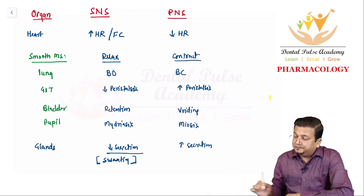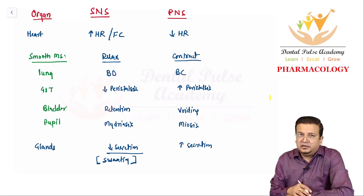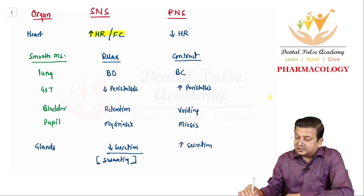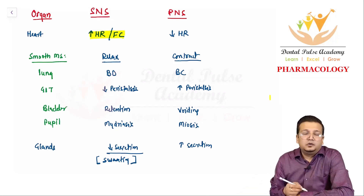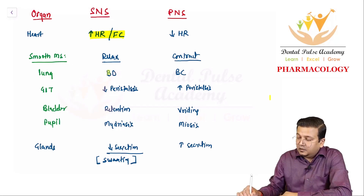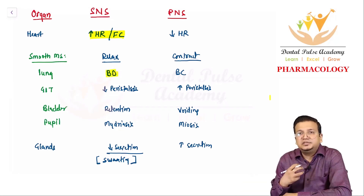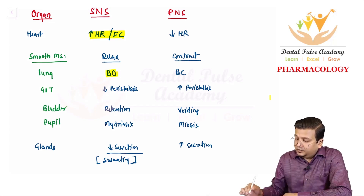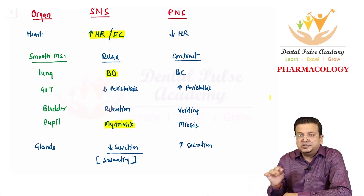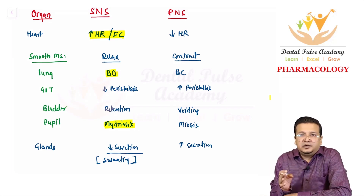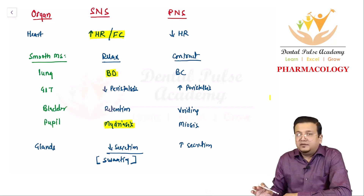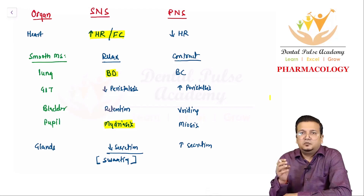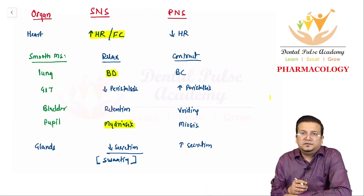We can now understand why this occurs. When the body is under stress, sympathetic activity increases: the heart beats faster to increase blood supply, the lungs dilate to bring more oxygen, and the pupils dilate to increase the field of vision. Basically, any activity needed to overcome stress is a sympathetic response. That covers the basic understanding of the autonomic nervous system — its definition, main parts, and broad functions.